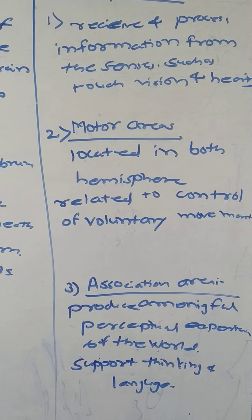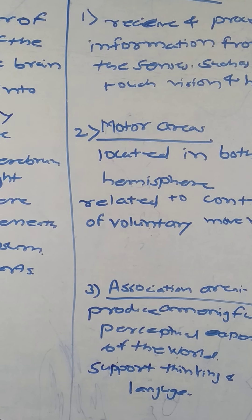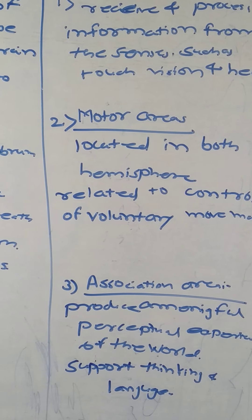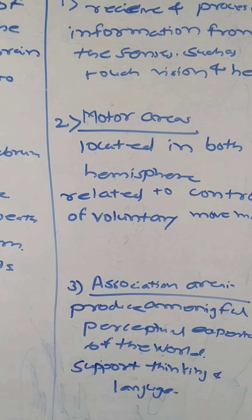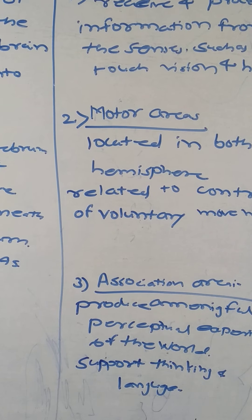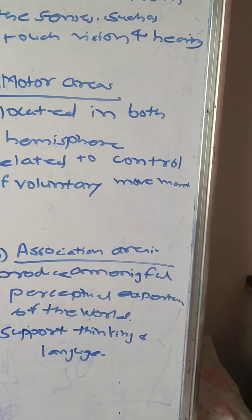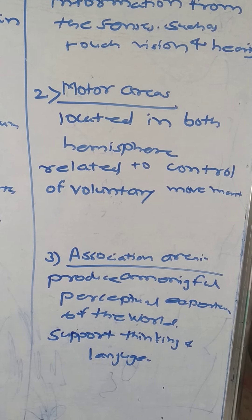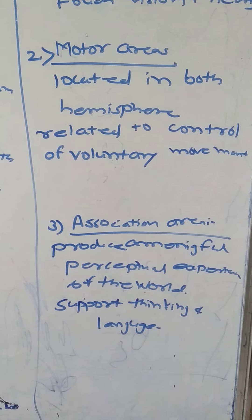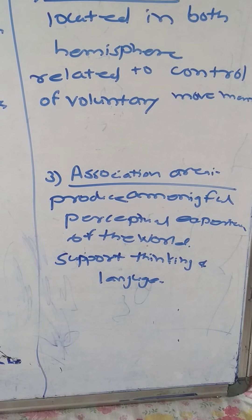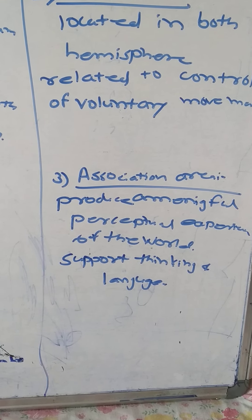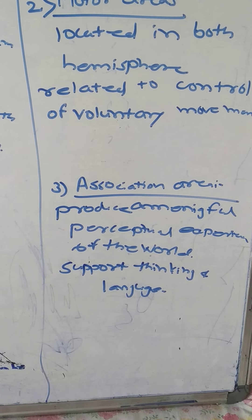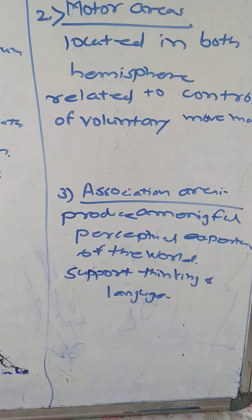The motor areas are located in both hemispheres of the cortex and are very closely related to control of voluntary movement, especially fine finger movements performed by the hand. The right half of the motor area controls the left side of the body and vice versa. Association areas are the parts of the cerebral cortex that do not belong to primary regions; they function to produce meaningful perceptual experience of the world, enable us to interact effectively, and support abstract thinking and language.